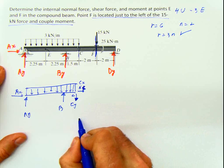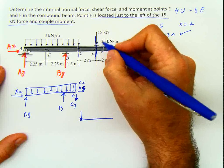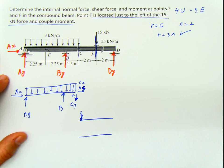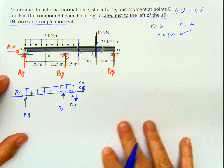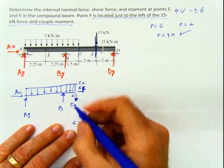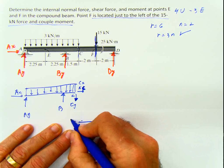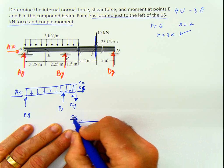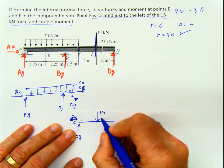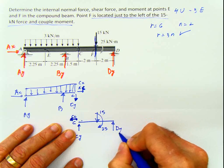At the other side of the element, I have the 15 kilonewton force. If I study that other side, the point C is here. The reaction goes in the opposite direction — this is CY and CX in the opposite direction. I have the 15 kilonewton force and the moment of 25 kilonewton meters, plus the reaction at D.